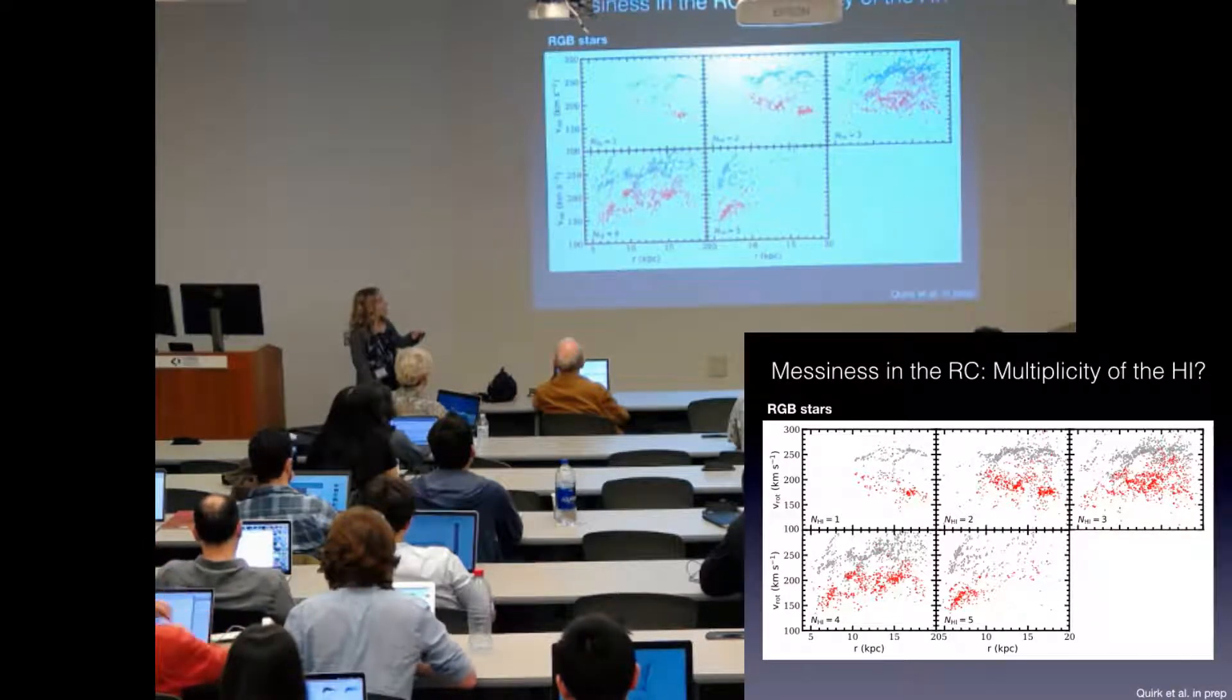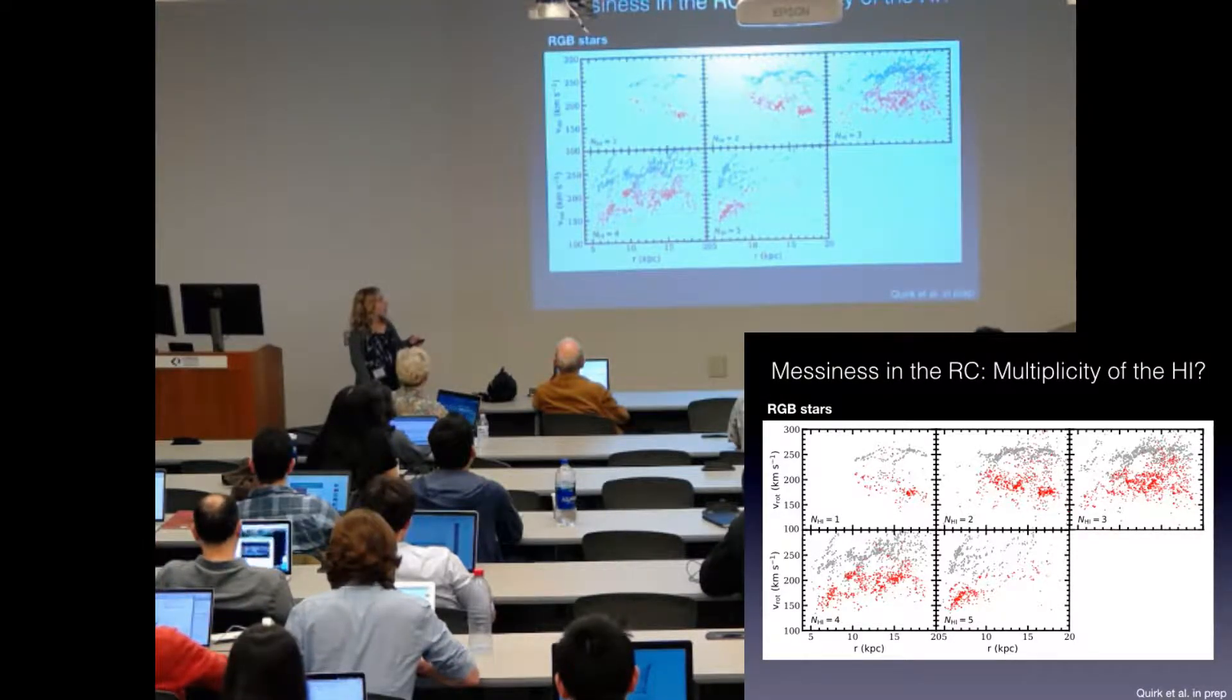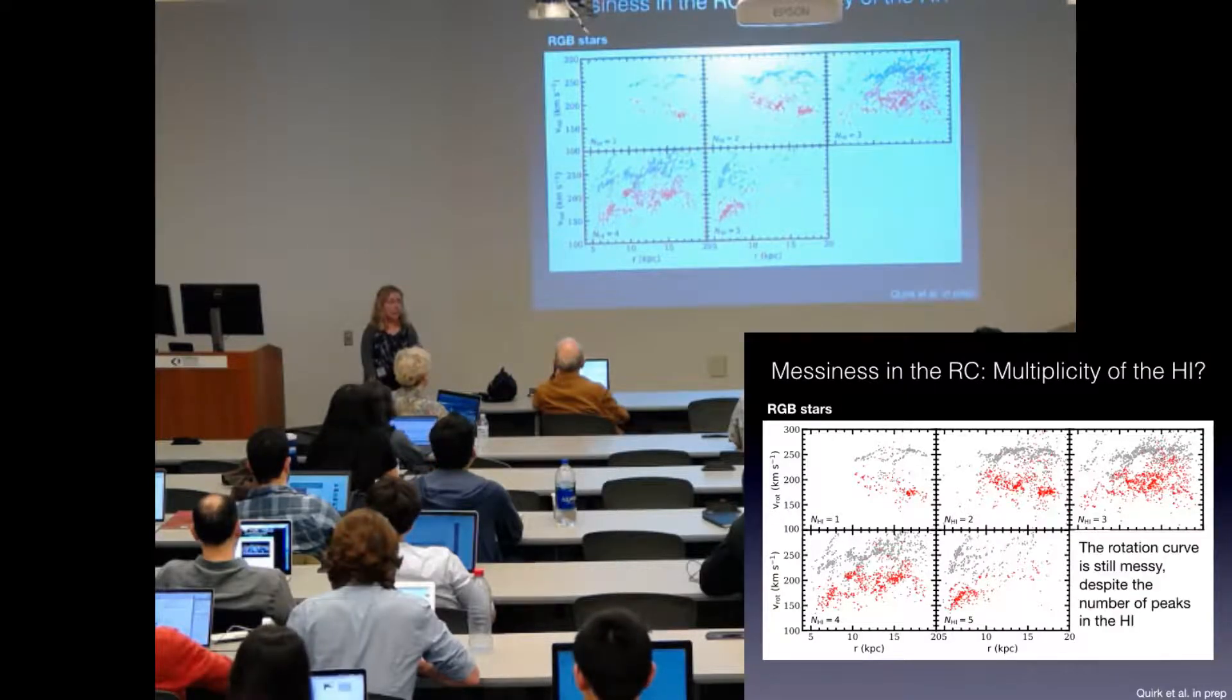But despite this, you still see about the same amount of structure or substructure and scatter at all complexity of line of sights.